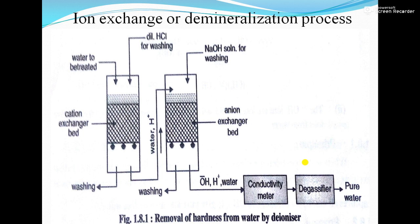In the zeolite process, there is an exchange of only cations. In the ion exchange method, there is an exchange of cations as well as anions. You can see the diagram — this is a cation exchanger resin or bead, and this is an anion exchanger resin or bead. Water coming in here has only cations exchanged, and then water goes to the anion exchanger bead where anions get exchanged. So here only cations will exchange, and here only anions will exchange.